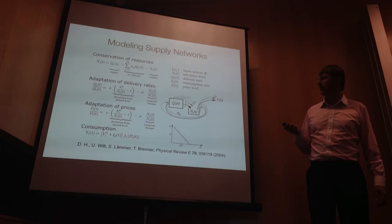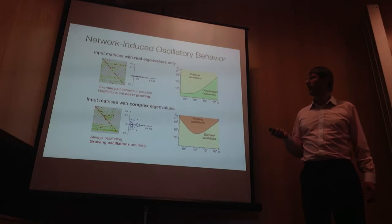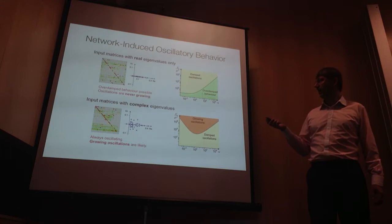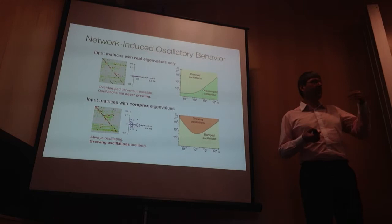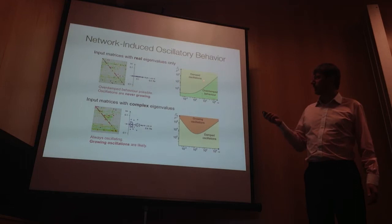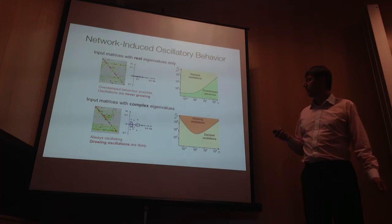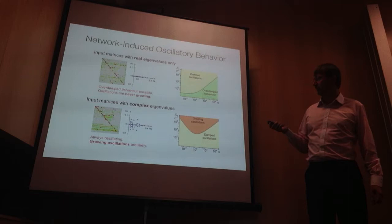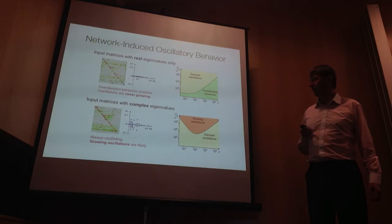It's interesting to do an analysis of the dynamics of these equations. It turns out you can have a number of different cases depending on the so-called input-output matrix. You can either have over-damped behavior — where your system, when driven out of equilibrium, goes back into equilibrium — or damped oscillations, where the system oscillates around the stable equilibrium. But it can also happen that you have growing oscillations, depending on the network structure of the supply network.